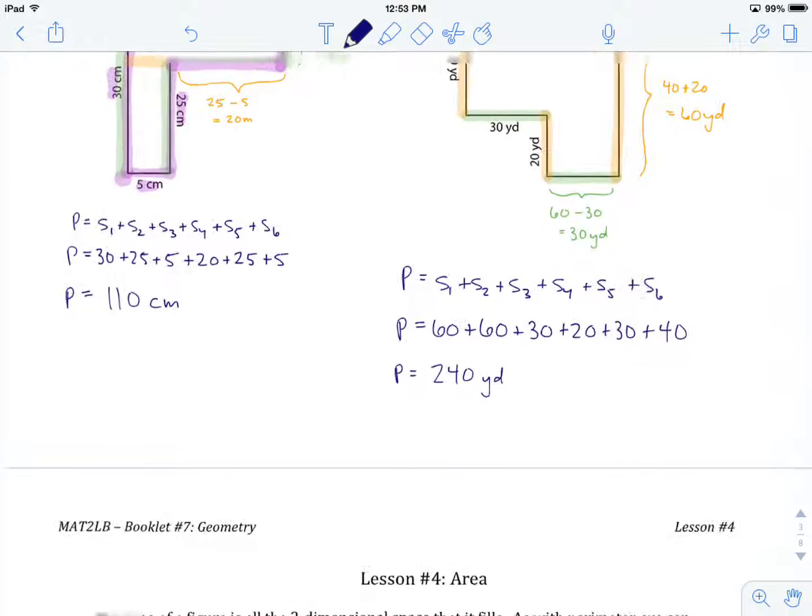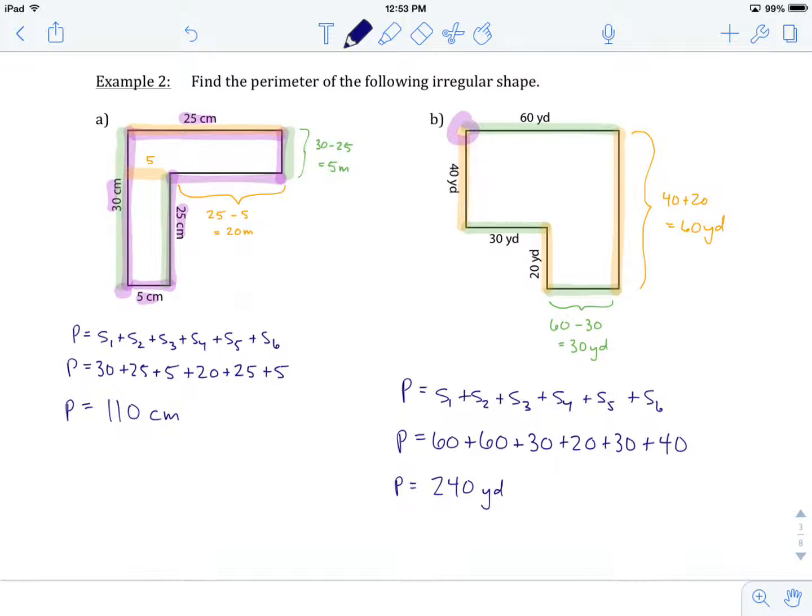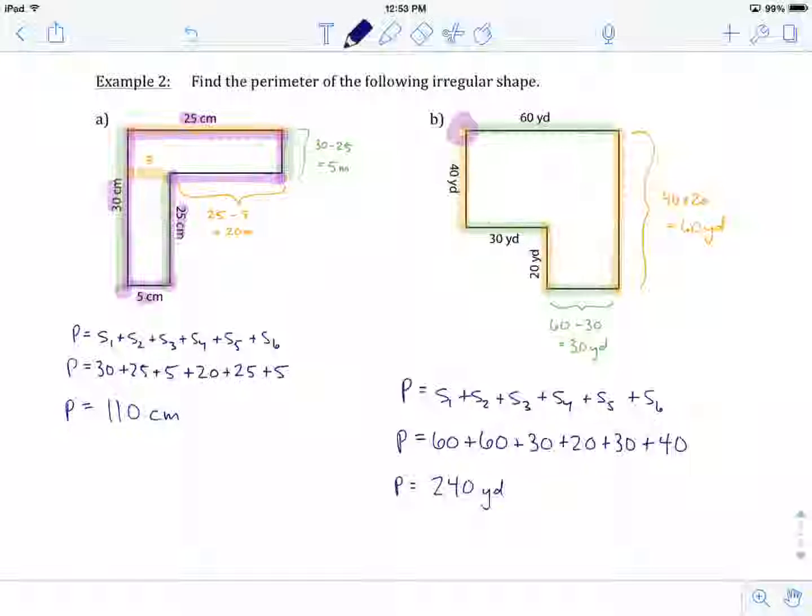And that's how you calculate the perimeter of an L shape, an irregular shape, with side lengths missing. If there are any of these you're unsure of, go back and review these examples and try them again on your own. If you're feeling confident about these, now's the time to head off to the worksheet. This is the end of lesson number three. Good luck with the worksheet, and we'll see you in lesson number four.